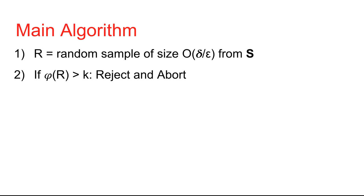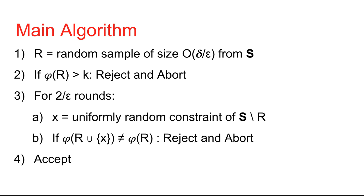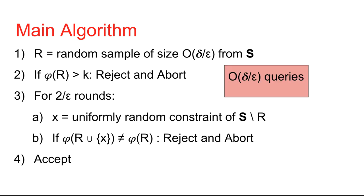Our main algorithm is the following. First, we sample O(delta / epsilon) constraints from S. We check if phi of R is greater than k — if so, we reject and abort. Then we sample O(1 / epsilon) more constraints from S minus R. We check if phi of R ∪ {x} is not equal to phi of R — if so, we reject and abort. At the end, if we haven't rejected, we accept. The query complexity is O(delta / epsilon).